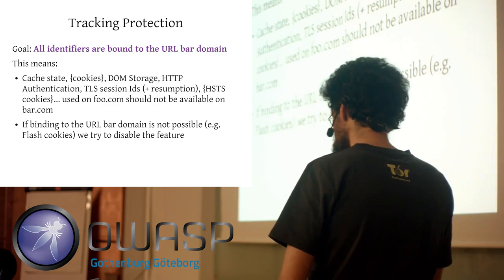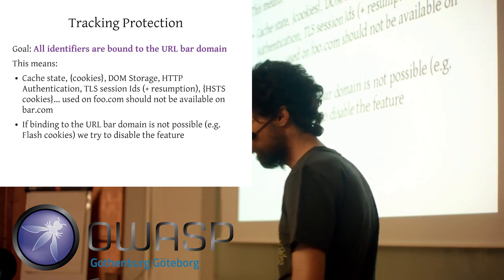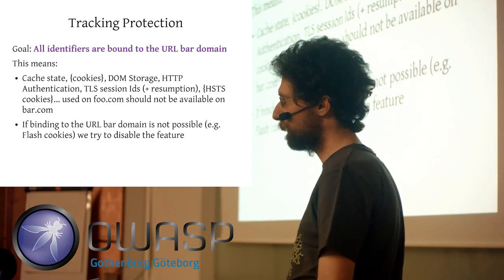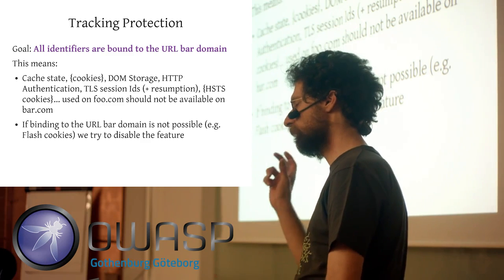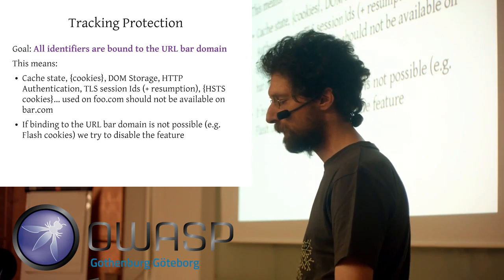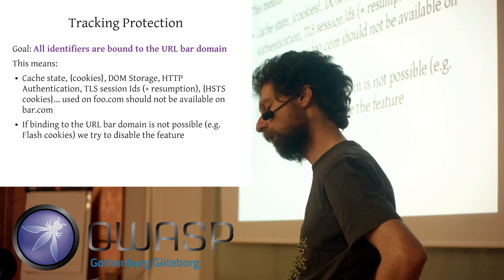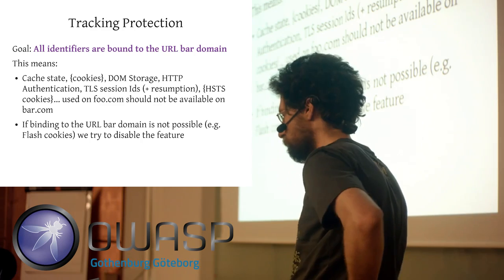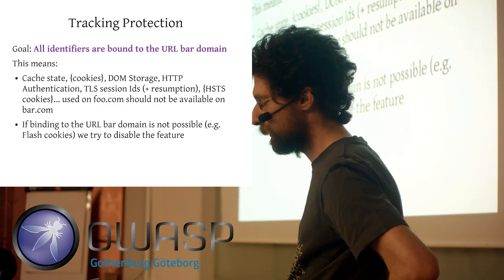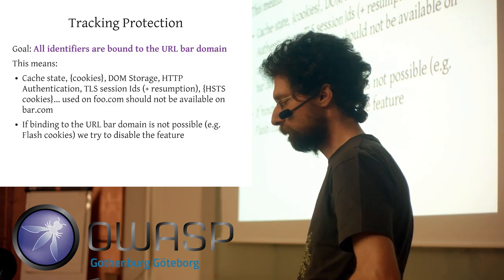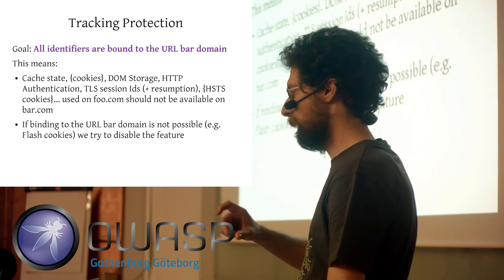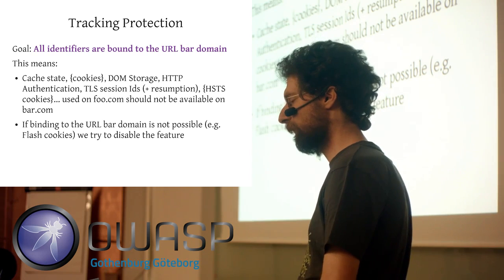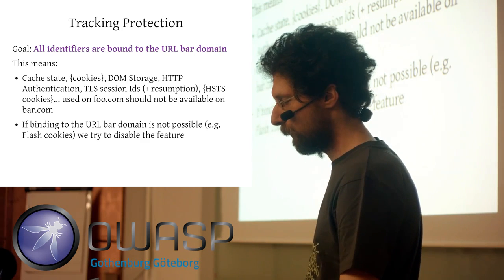Tracking protection. What we are concerned with is tracking across different domains. That means you're visiting foo.com in one tab and bar.com in a second tab, and what we want to achieve is that people who have embedded things on both sites are not able to correlate your traffic.